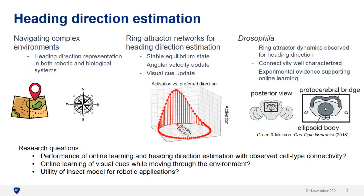Navigating complex environments is a challenging computational task, which involves estimating an orientation or heading direction. Ring attractor network models have been used as a theoretical basis for understanding and calculating heading direction, where individual neurons have preferred orientations. Heading direction is represented at a population level with a stable equilibrium state that we'll refer to here as an activity bump.